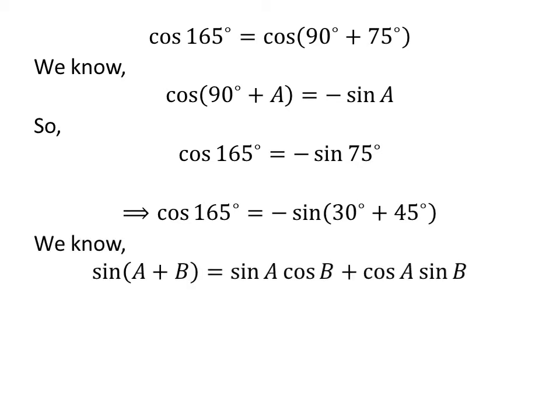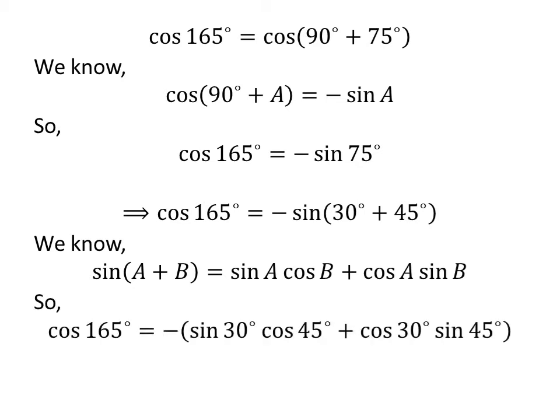We know sine of A plus B is equal to sine of A times cosine of B plus cosine of A times sine of B. Applying this identity gives us cosine of 165 degrees is equal to minus sine of 30 degrees times cosine of 45 degrees plus cosine of 30 degrees times sine of 45 degrees.